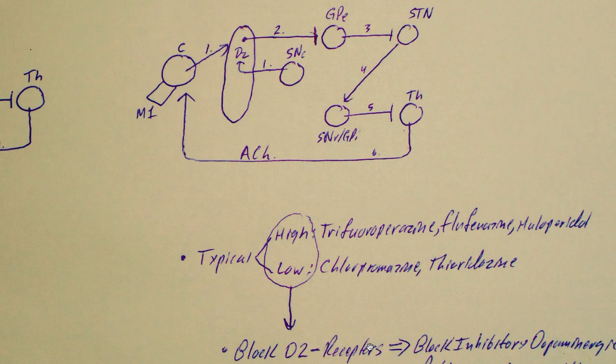Those block D2 receptors in the striatum. So they block this D2 receptor signal here. Process number two never happens, so the globus pallidus externa is disinhibited.